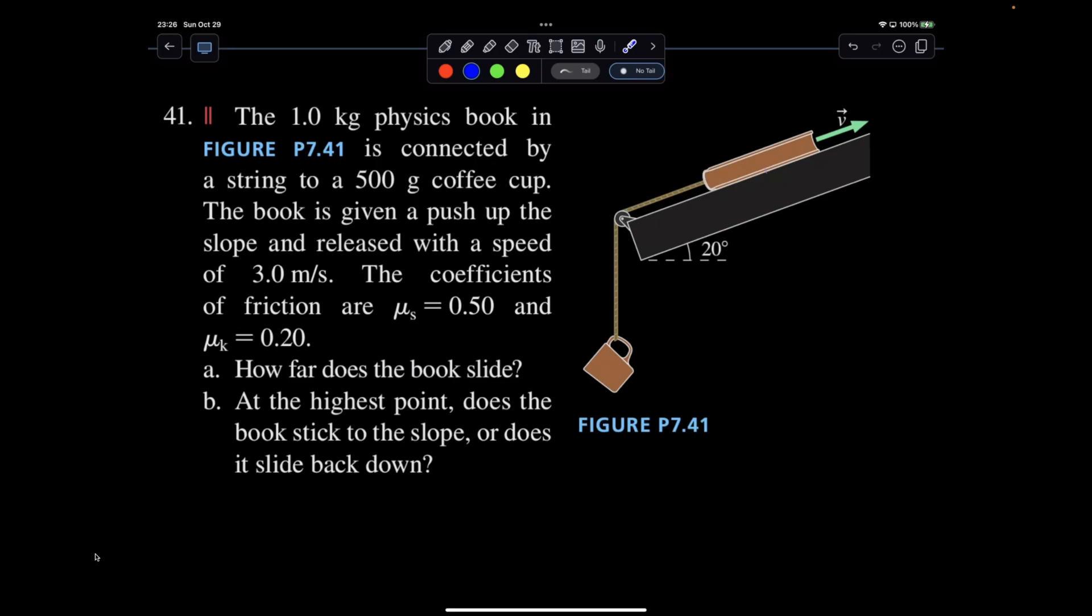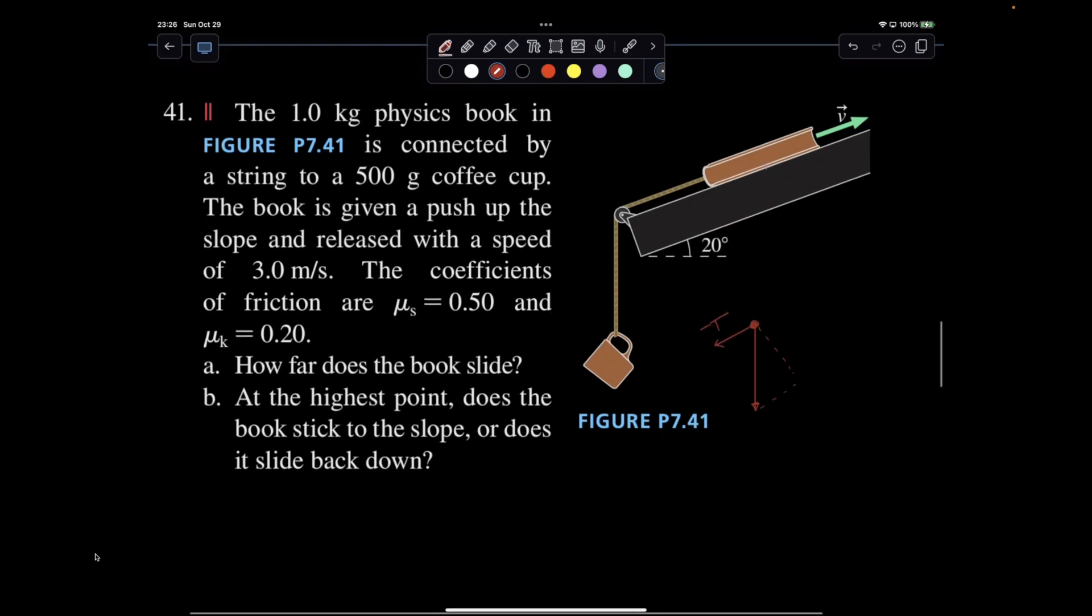I'm going to answer part B first. In order for it to not slide back down, I need to have my force of gravity plus force of tension to be equal to available force of static friction. Here's my normal. If it is possible for it to stick to the surface, I'm going to compare. If it sticks to the surface and doesn't slide back down, then my tension is going to equal mg for this one.